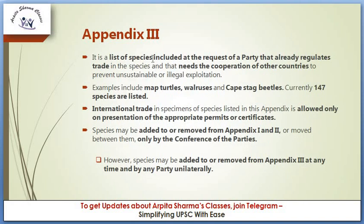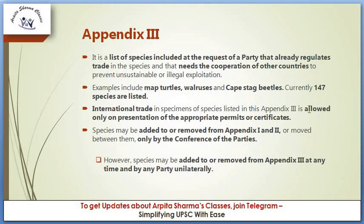Appendix 3 is a list of species included at the request of a party that already regulates trade in the species and needs the cooperation of other countries to prevent unsustainable or illegal exploitation. Parties voluntarily request inclusion. Examples include map turtles, walrus, capes, and stag beetles. Currently 147 species are listed — the fewest of the three appendices. International trade in Appendix 3 species is allowed only on presentation of appropriate permits and certificates.